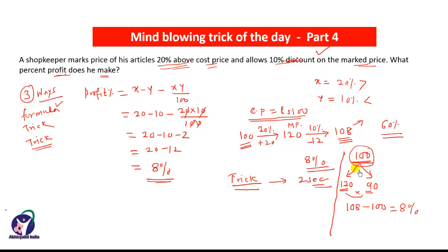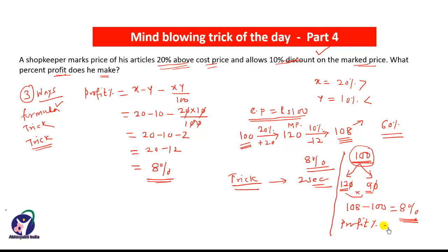See again: let the original price be ₹100. 20% price increase makes it ₹120. If 10% discount is given on ₹100 it becomes ₹90. Forget the zeros — it's 12 and 9. 12 × 9 = 108. So 108 − 100 = 8%, and therefore there is a profit percent of 8% in this transaction.